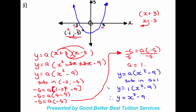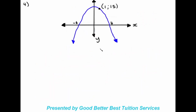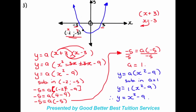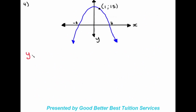Just like that, we found the equation of a parabola without being given the turning point — all they gave us were the x-intercepts and one other coordinate on the graph. Moving on to the next example, which is similar: they give us x-intercepts and another coordinate. We write y equals a, then open two brackets. Backtracking from negative four and positive four: negative four becomes x plus four, and positive four becomes x minus four.